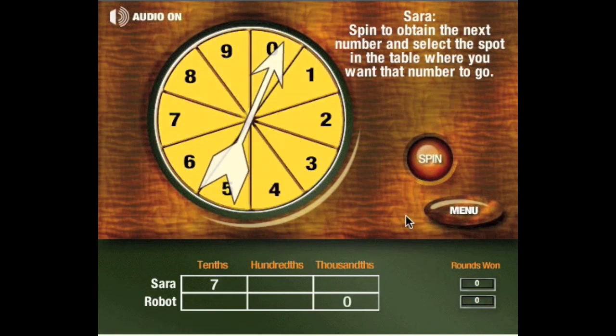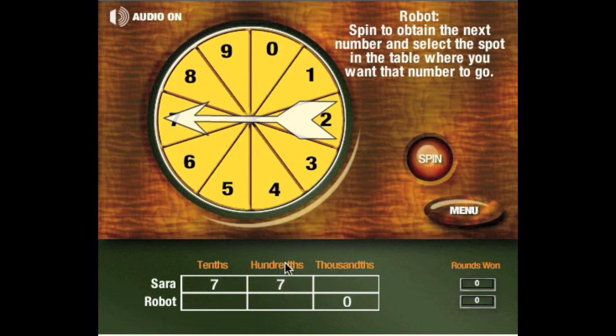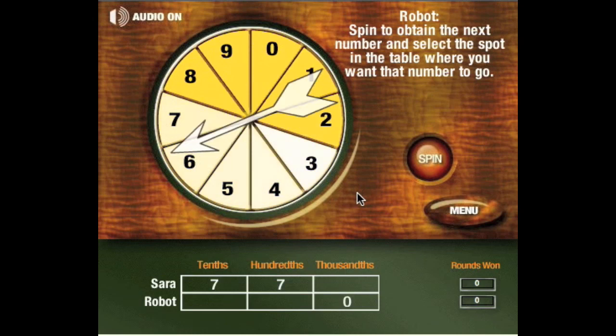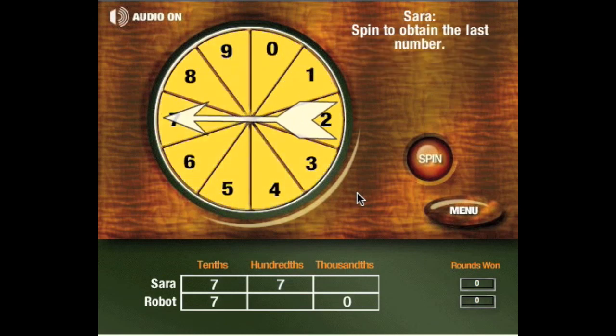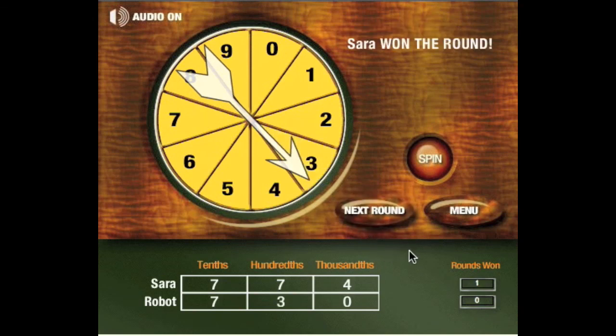The robot got a zero and very wisely put that in the thousand spot. Sarah has another seven. She's off to a good start. The robot also has a seven now in the tenth place. Sarah has a decimal point seven, seven, four. The robot has a decimal point seven, three, zero. So Sarah wins this round.